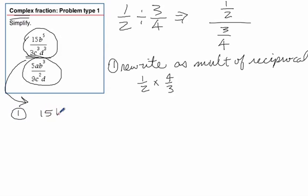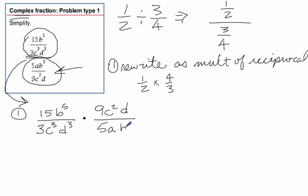We'd write the 15b to the fifth over 3c cubed d cubed, and then it's going to be times, and we're going to have to write the reciprocal of this denominator. So the 9c squared d goes on top and the 5ab cubed goes on bottom. So that's step one right there.